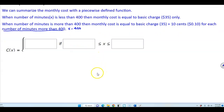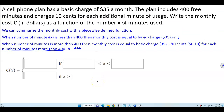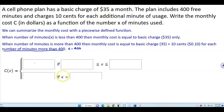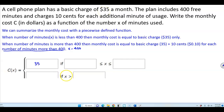So putting our answer together: the basic charge of $35 gives us the first piecewise function where C equals 35. That means it's $35 for minutes that go from 0 to 400.